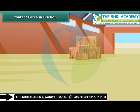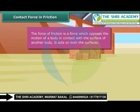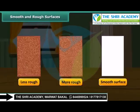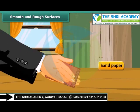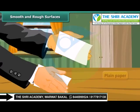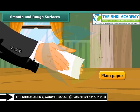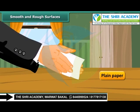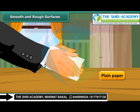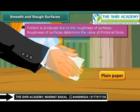The force of friction is a force which opposes the motion of a body in contact with the surface of another body, and it acts on both surfaces. Some surfaces are smooth and some are rough; some are less rough and some are more rough. Even a smooth surface has some irregularities and roughness on it. For example, when we try to move one sandpaper over the other, movement is not smooth — there is friction due to the interlocking of rough surfaces. But when we move one plain paper over the other, movement is smoother. Thus, friction is produced due to the roughness of surfaces, and depending on that roughness, the value of frictional force can be more or less.